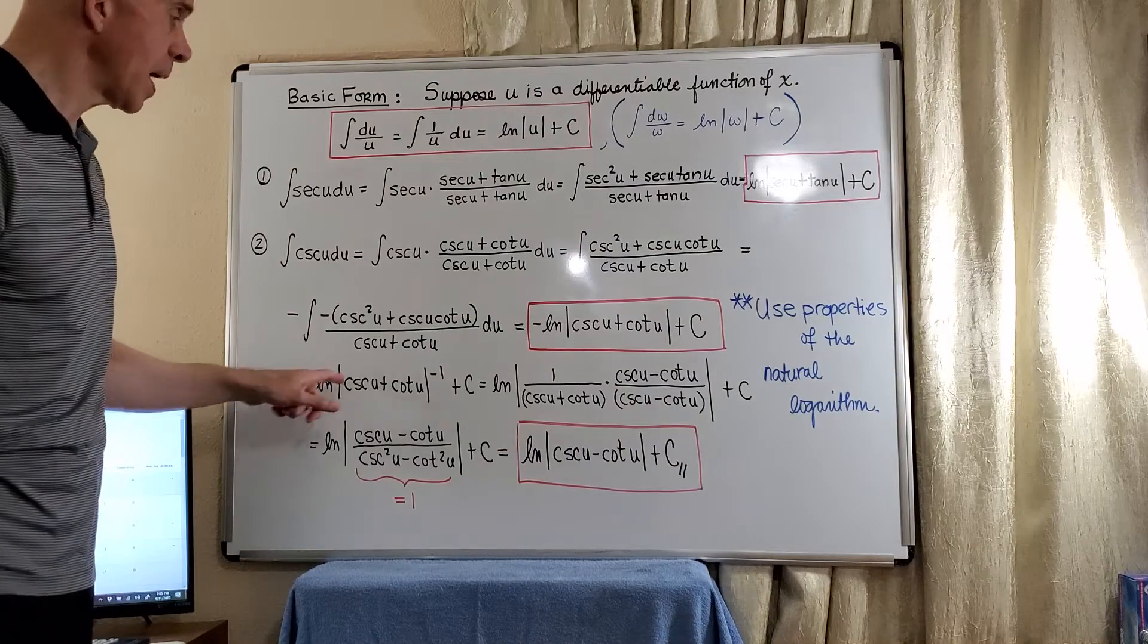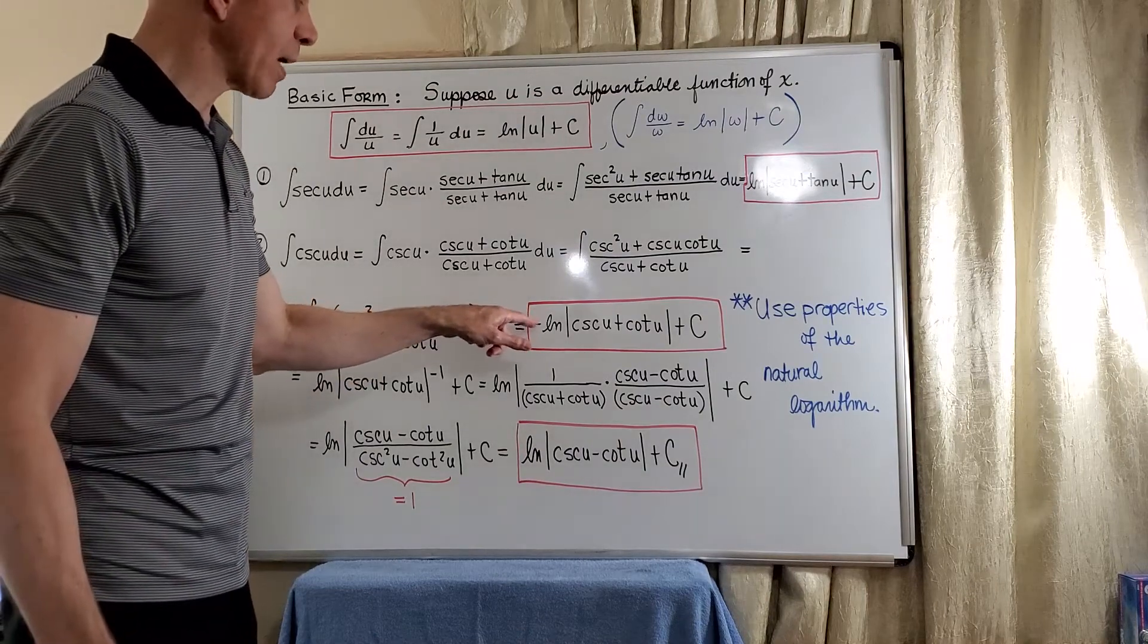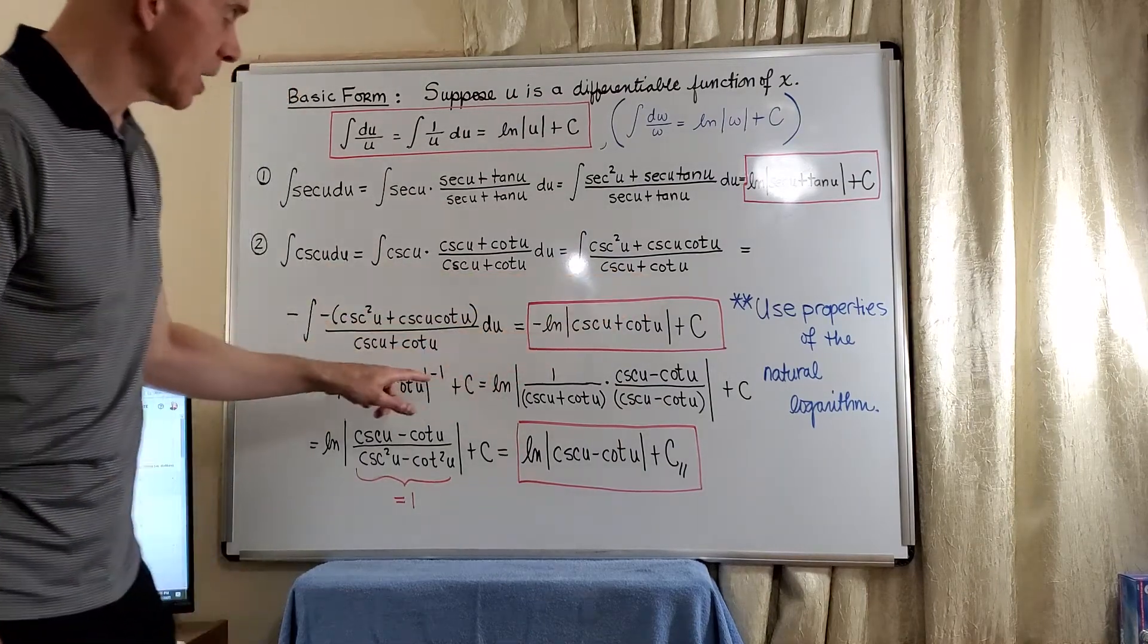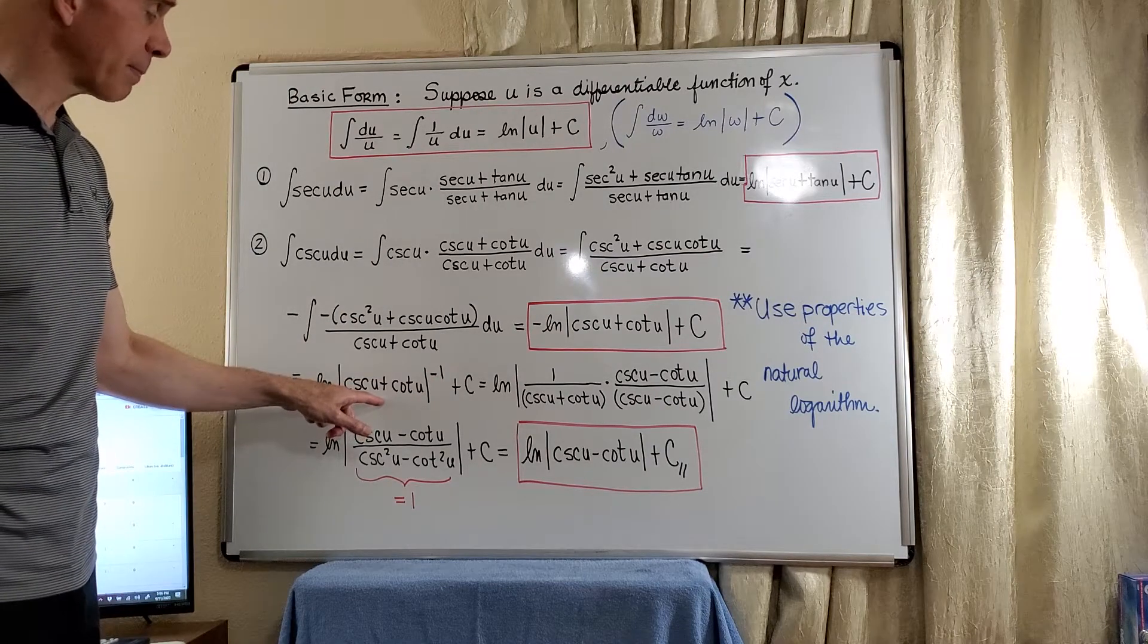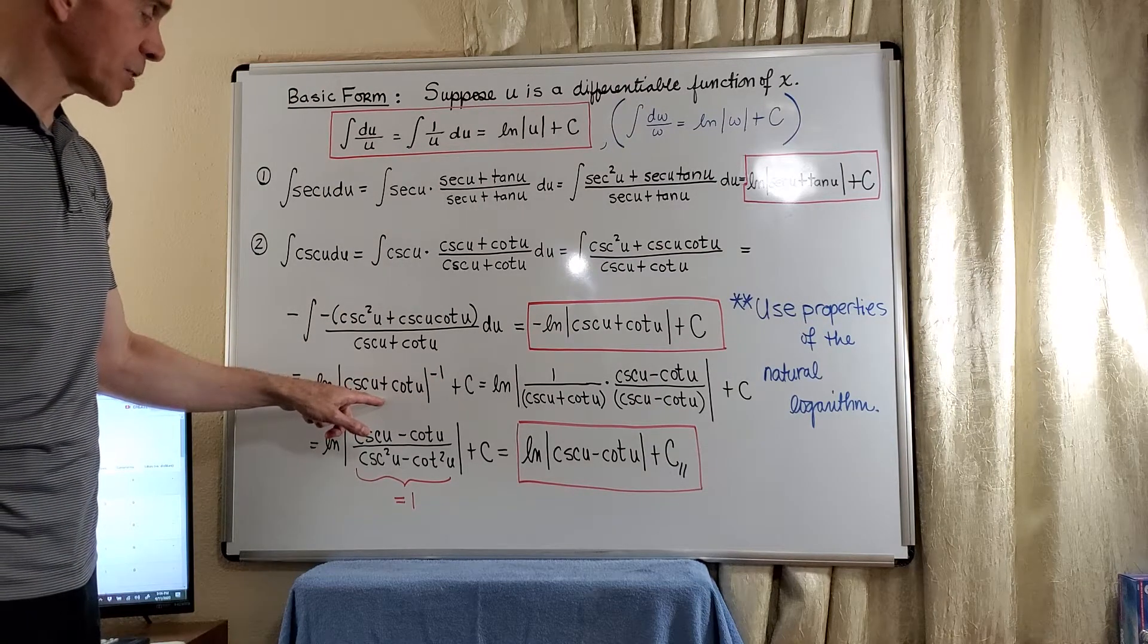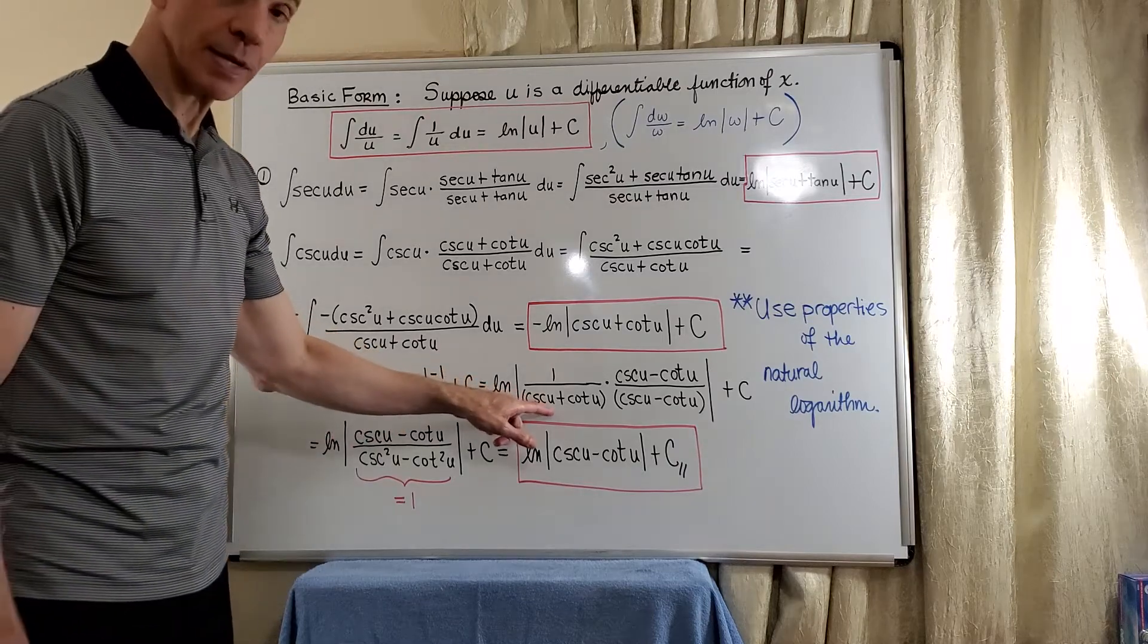So that would just mean using the property, the power rule to move this negative to a negative one power of the argument. And then that means you reciprocate the cosecant u cotangent u as I've done here.